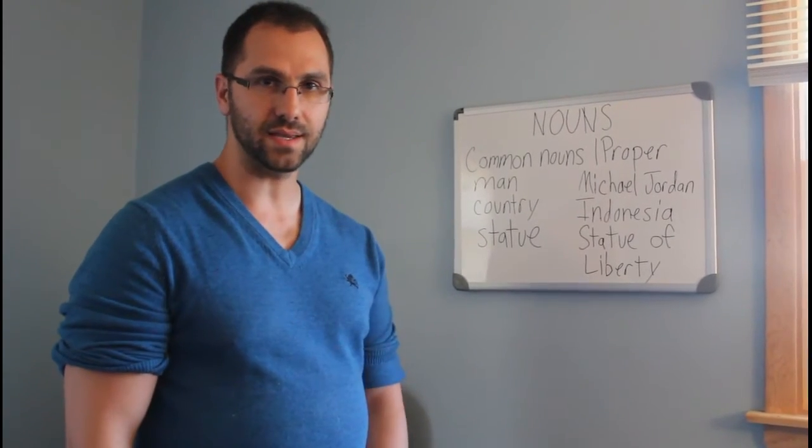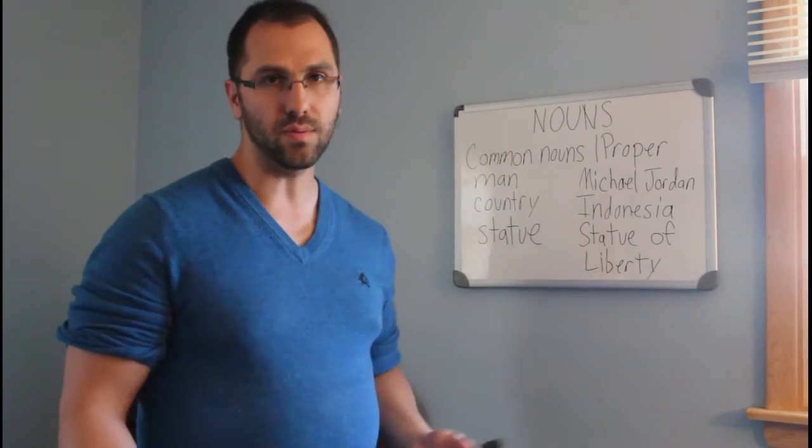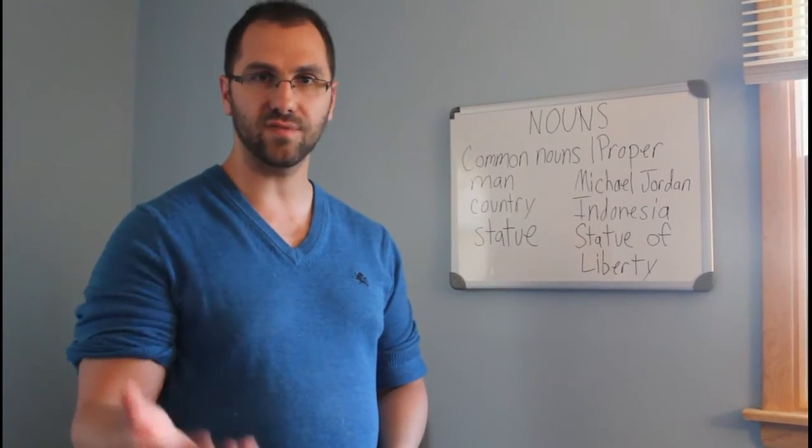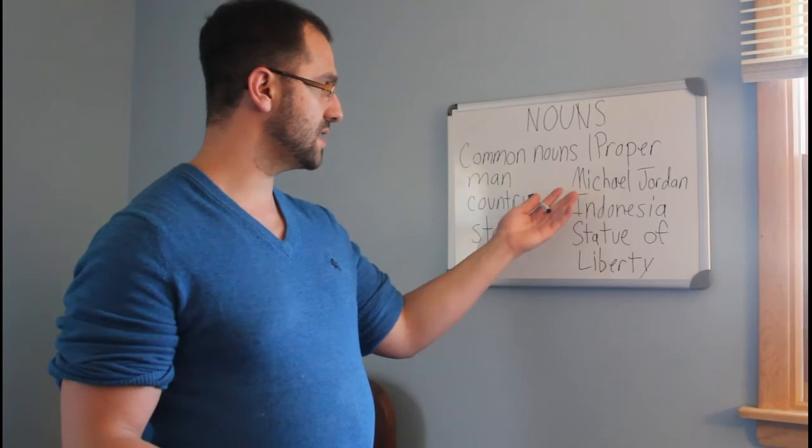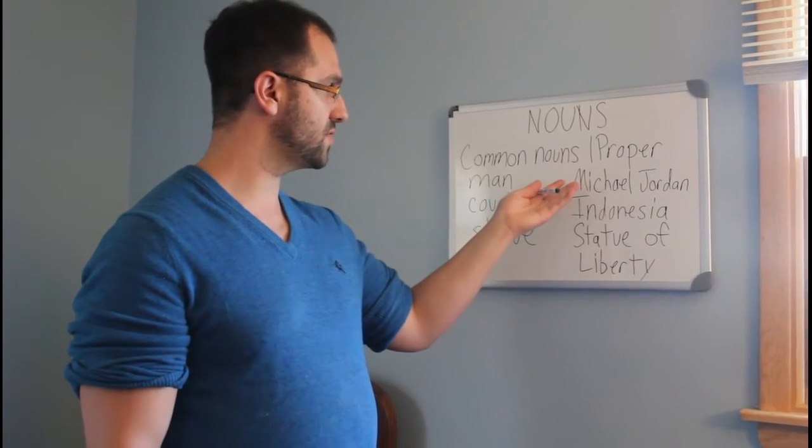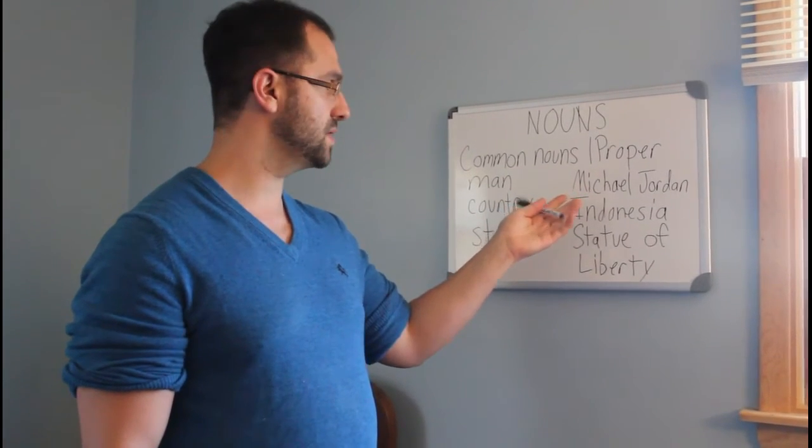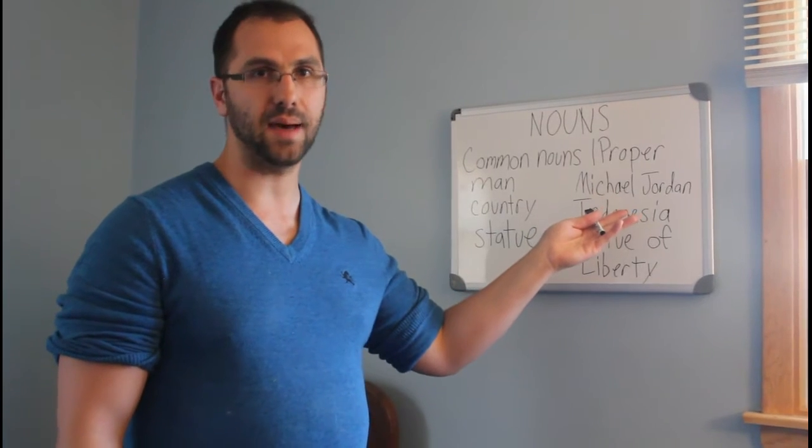Or someone famous like Michael Jordan, the basketball player. He's a specific person and his name is capitalized. His first name is spelled with a capital M and his last name is spelled with a capital J.